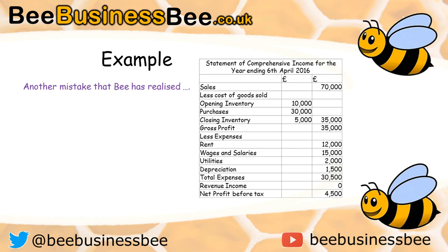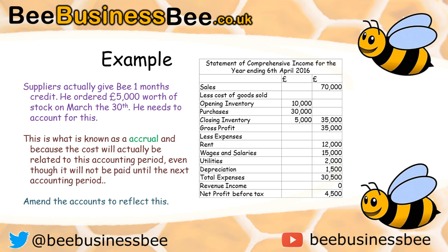Now, Bea has spotted that she made another mistake. This time, the supplier has actually given Bea one month's credit. As a result, Bea has ordered £5,000 worth of stock on March the 30th and needs to account for this. As you can see in the example, Bea currently has purchases of £30,000. However, she's ordered £5,000 worth of stock on March the 30th and forgot to include it. She isn't going to pay for that stock until the next trading period. This is what's called an accrual, because the cost is actually related to this accounting period, even though it won't be paid until the next accounting period — it's got to be calculated for this year on the 6th of April 2016.